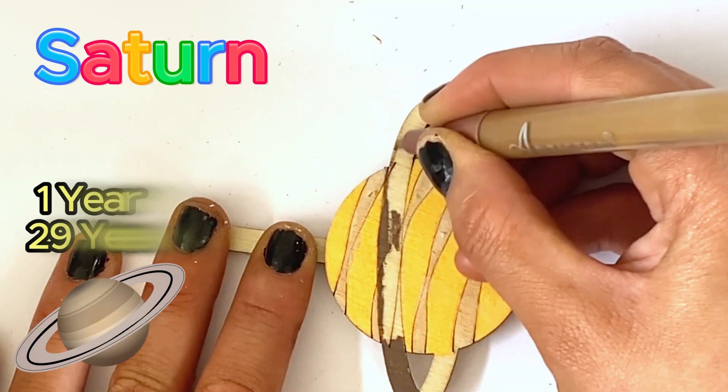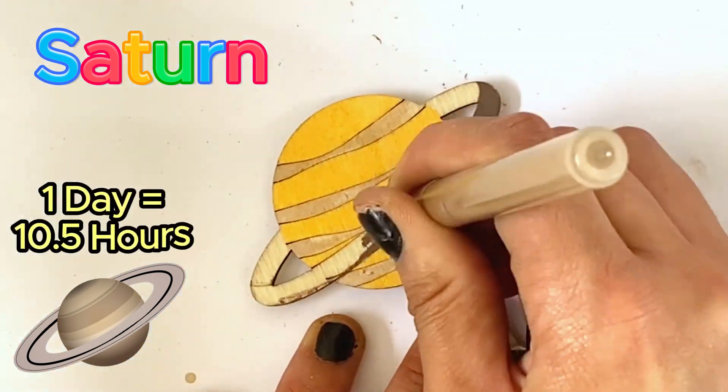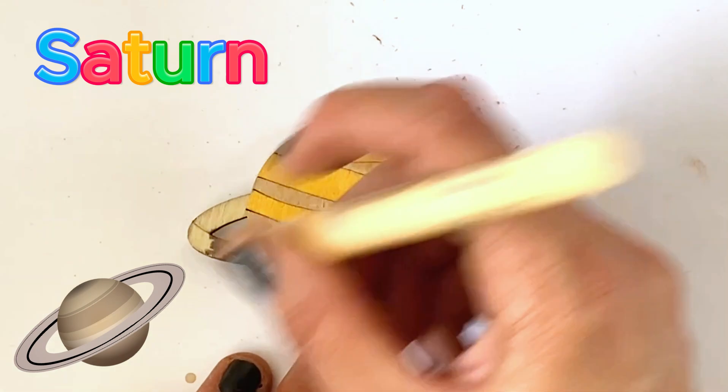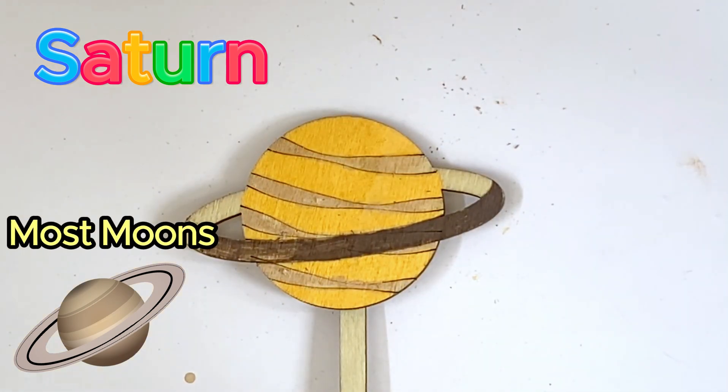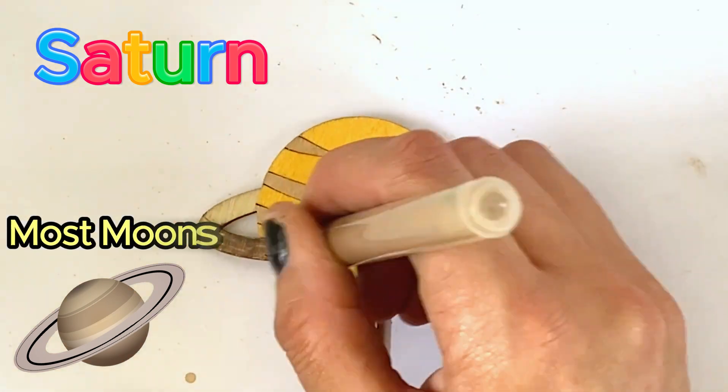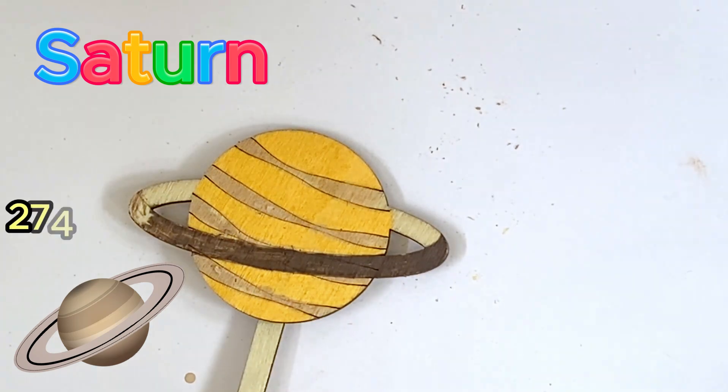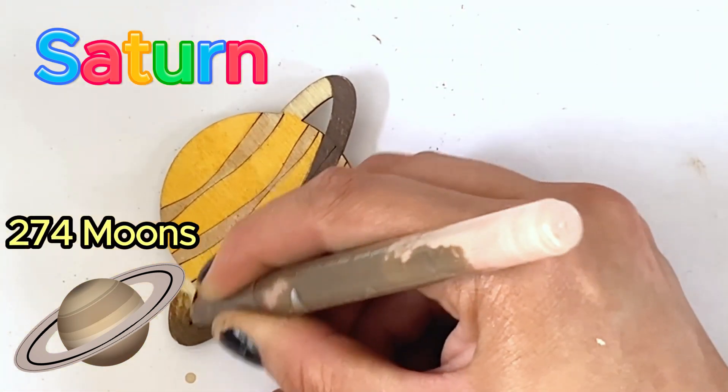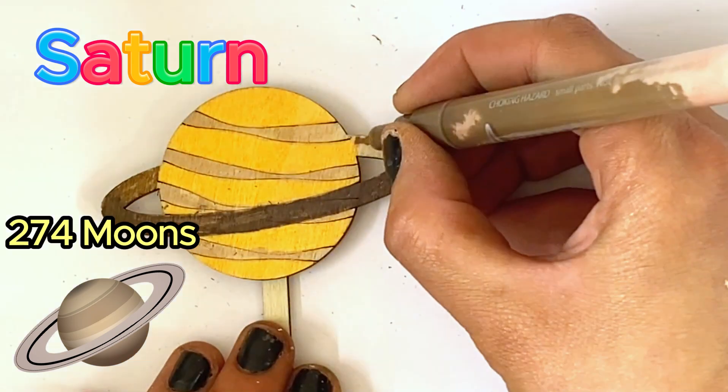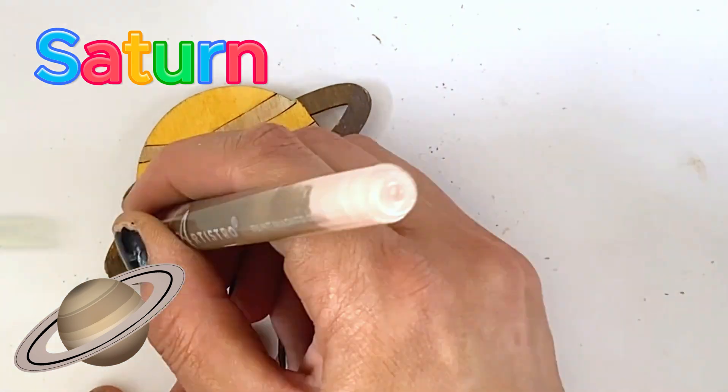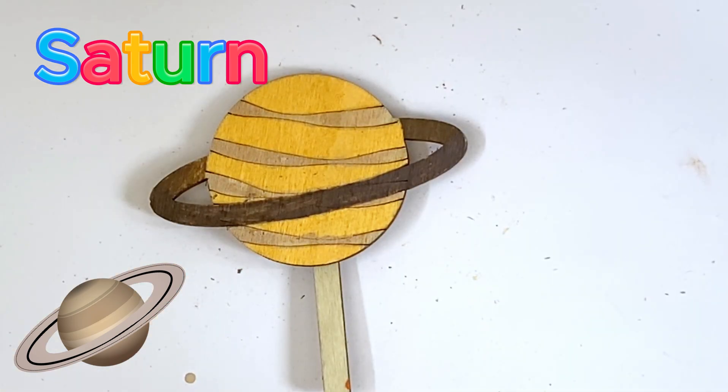A day on Saturn is around 10 and a half hours. And Saturn has the most moons in our entire solar system. Saturn now has 146 confirmed moons as of March 2024. And here is our finished Saturn.